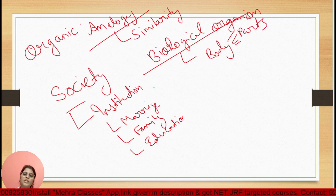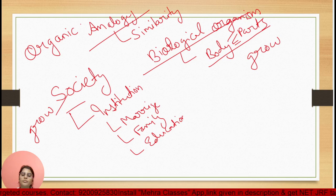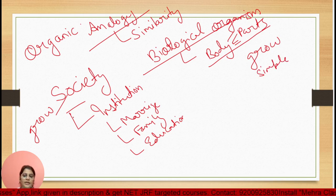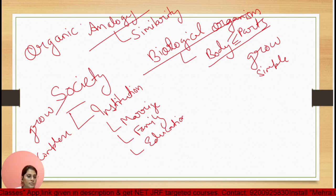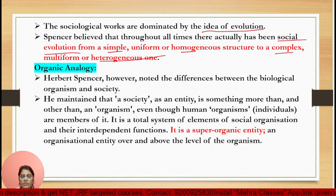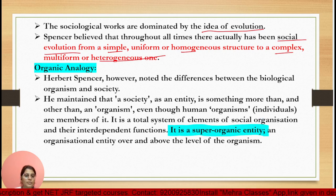Just as our body parts grow, society also grows. Our body starts very simple, then grows more complex. Similarly, our society grows and becomes more complex. Different organs play each function in our body, and different institutions play each function in our society. Spencer called society a 'Super Organic Entity' — remember this term. Herbert Spencer said this.